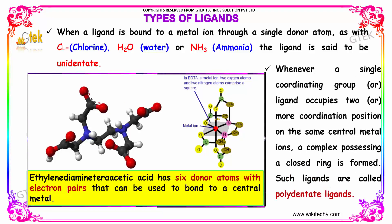Let's discuss the types of ligands. When a ligand is bound to a metal ion through a single donor atom, as with chlorine, water, and ammonia, the ligand is said to be unidentate.